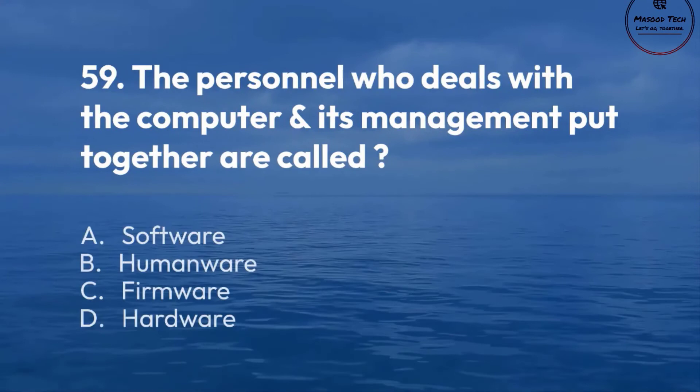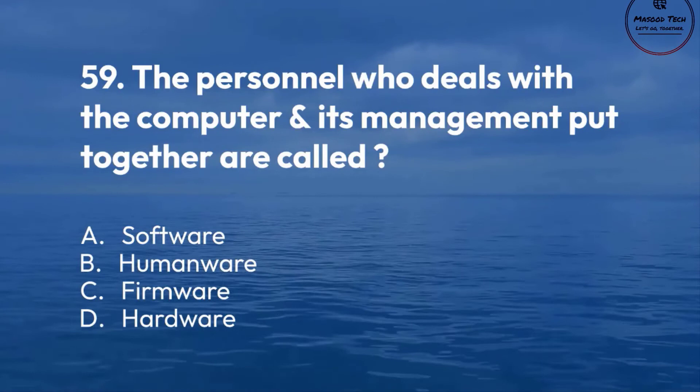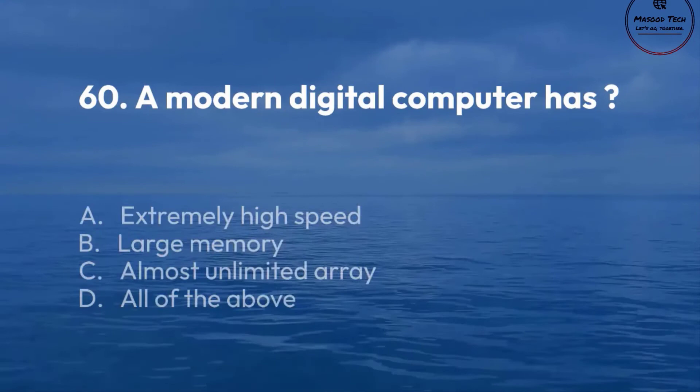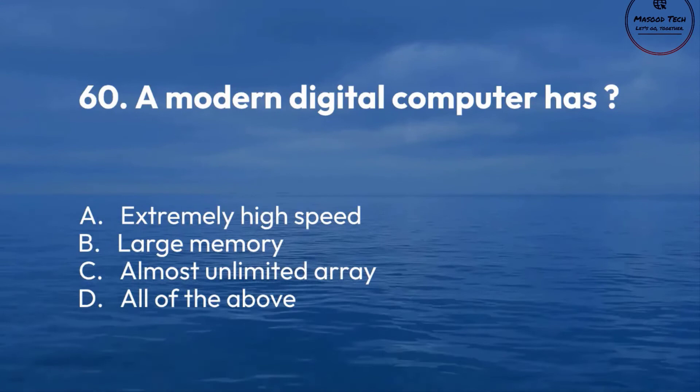Number 60. A modern digital computer has: A. Extremely high speed. B. Large memory. C. Almost unlimited array. D. All of the above. Correct answer is D.